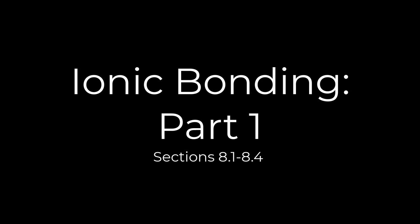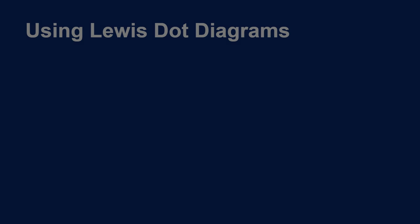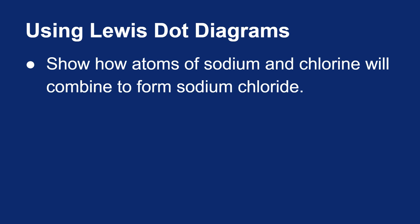A simple way to look at ionic bonding is through Lewis dot diagrams, or Lewis structures. Let's show how an atom of sodium and an atom of chlorine will combine to form the ionic compound sodium chloride.